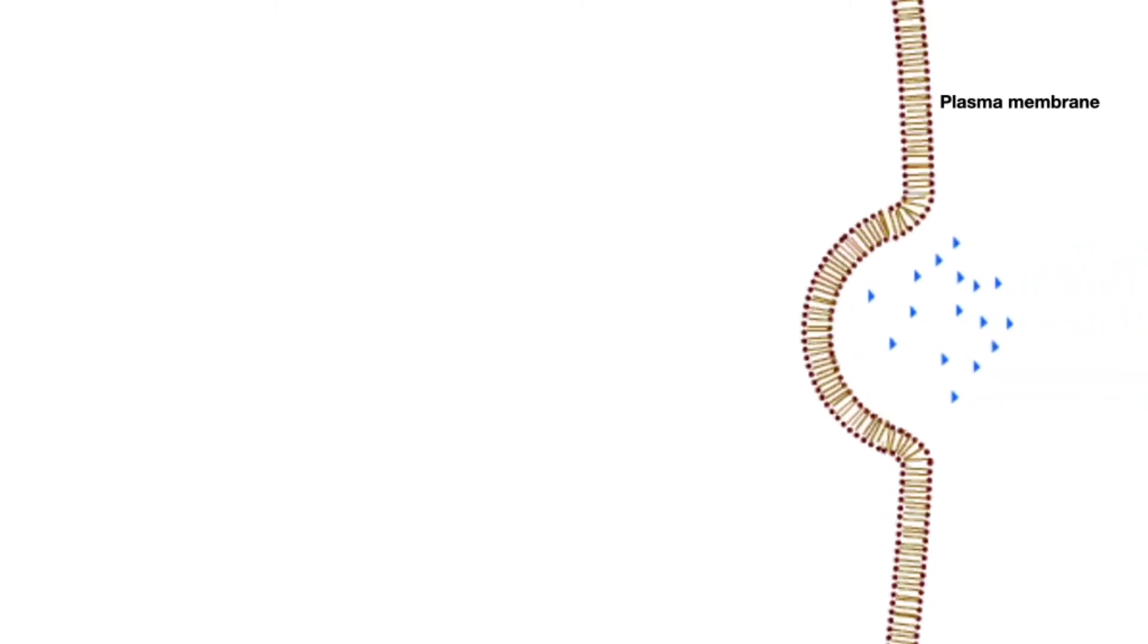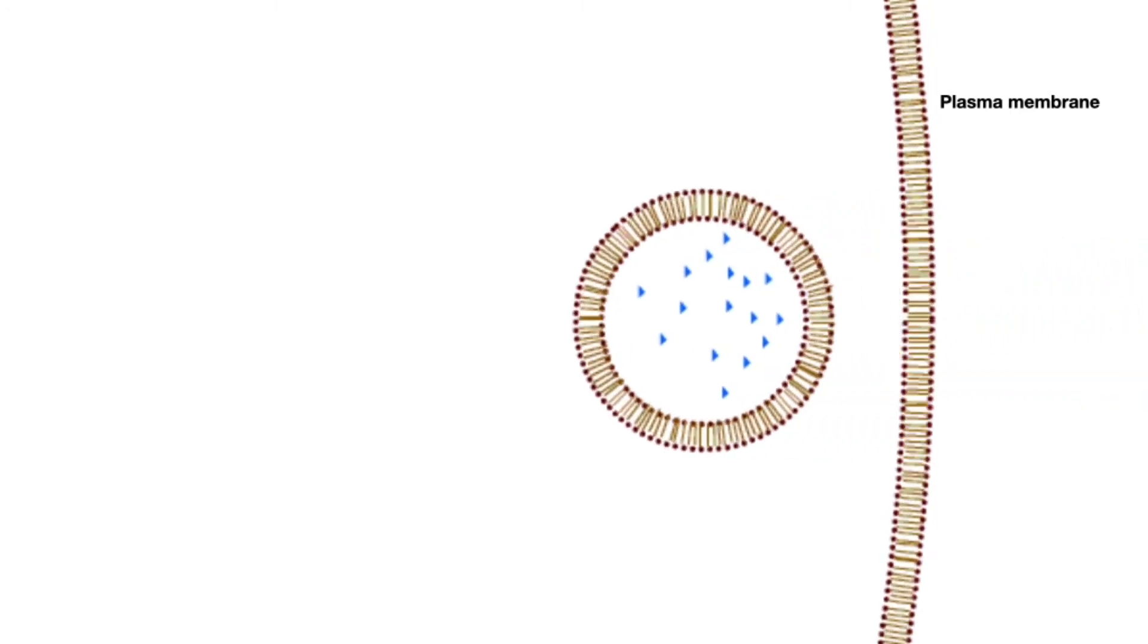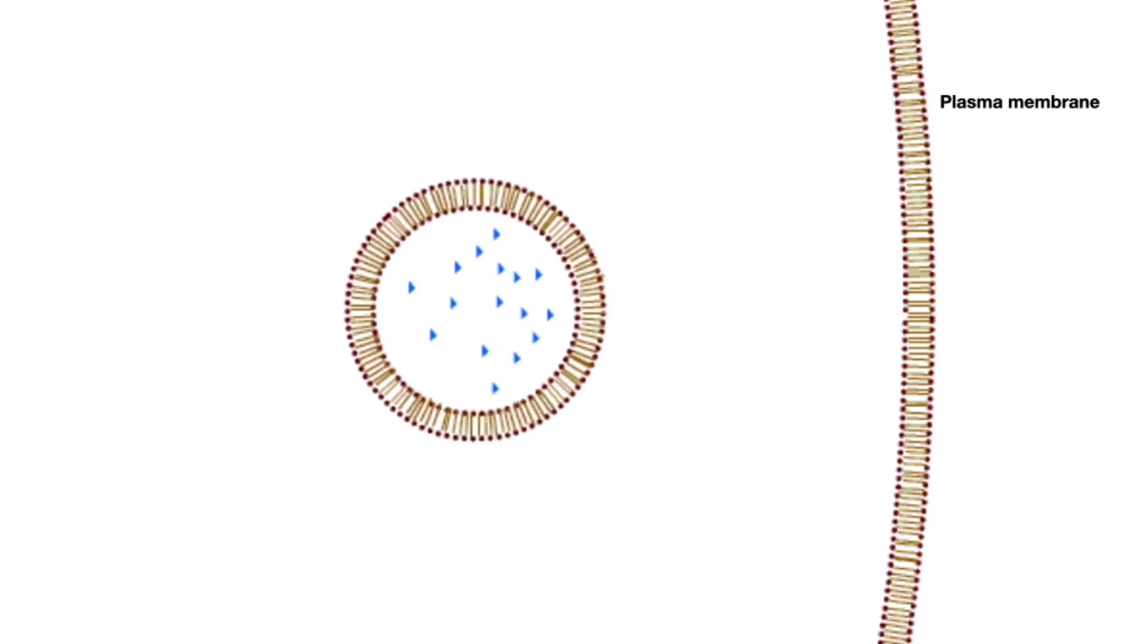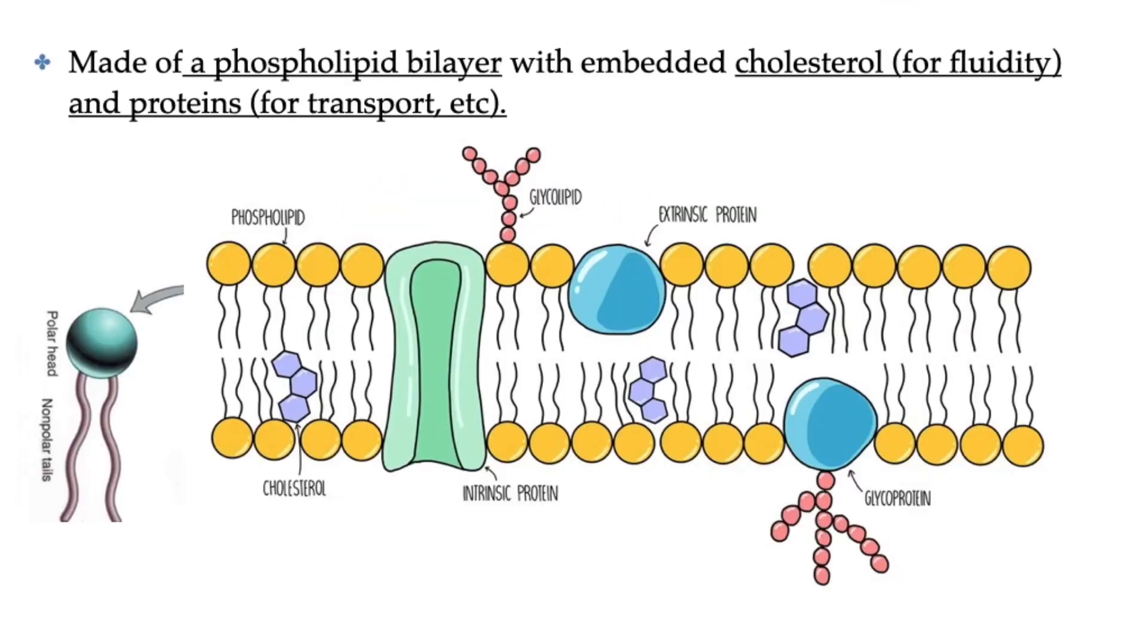Also, contents from outside the cell can be brought into the cell by forming vesicles from the plasma membrane. There are a number of different proteins embedded in the membrane or on its surface and they serve a variety of functions.